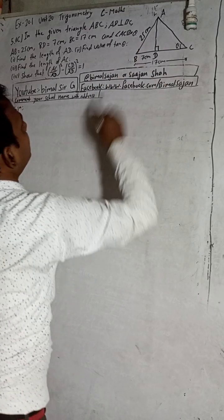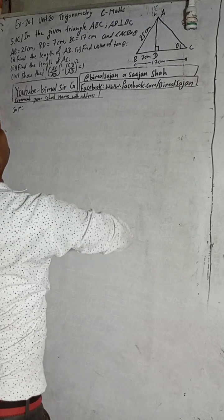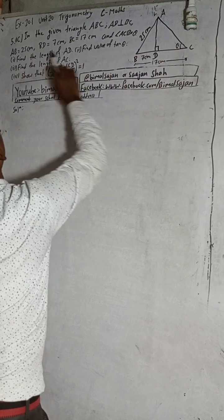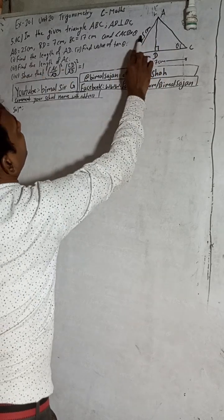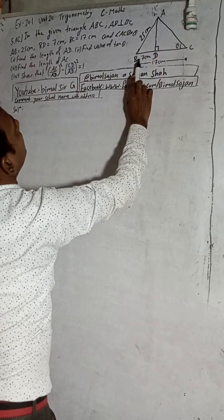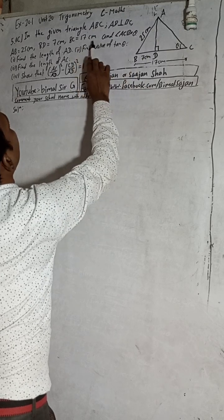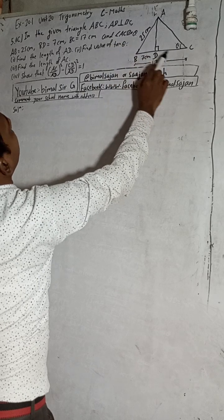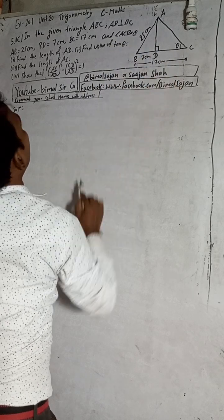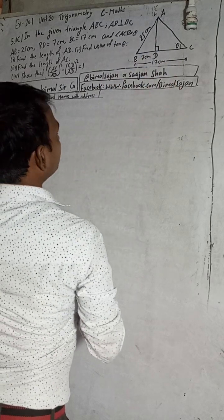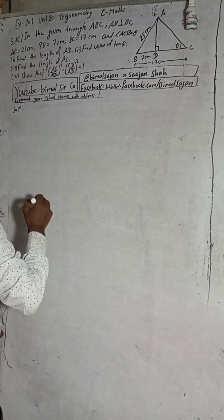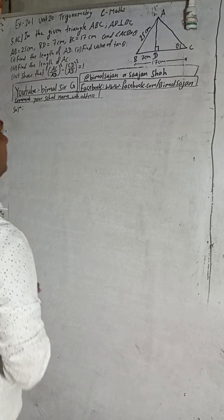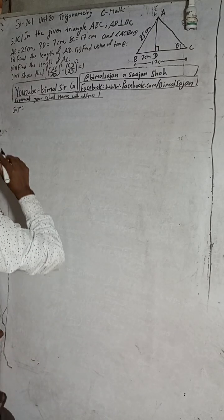Now I will solve this question. In the given triangle ABC, AD is perpendicular to BC. BC equals 7 cm, and angle ACB is theta. We need to find the length of AD.